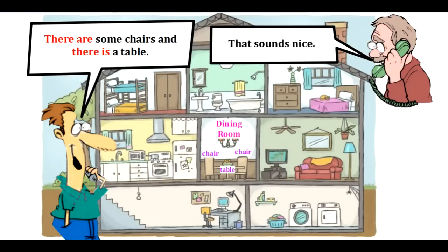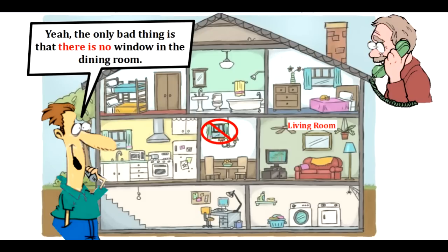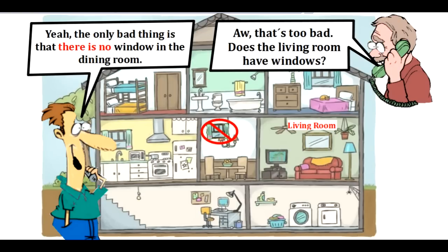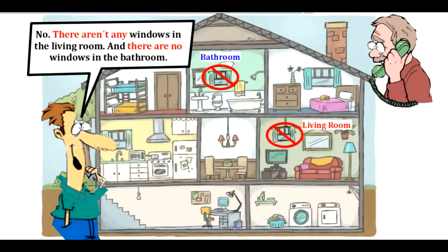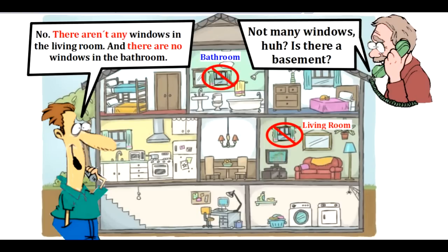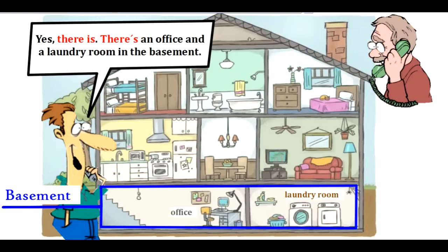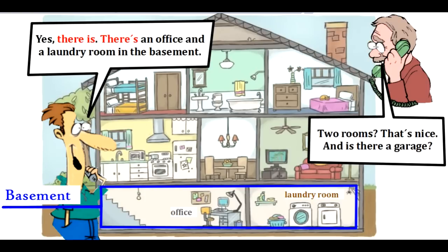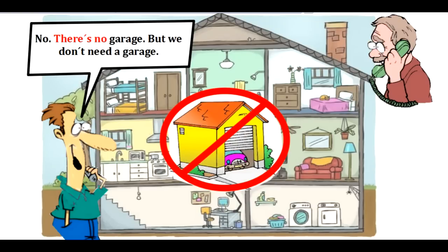Oh, that sounds nice. Yeah, the only bad thing is that there is no window in the dining room. Oh, that's too bad. Does the living room have windows? No, there aren't any windows in the living room, and there are no windows in the bathroom. Not many windows, huh? Is there a basement? Yes, there is. There is an office and a laundry room in the basement. Two rooms, that's nice. And is there a garage? No, there is no garage, but we don't need a garage.